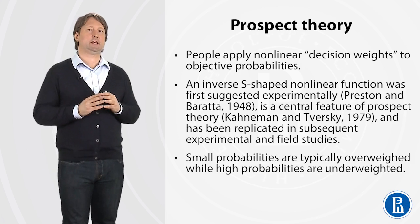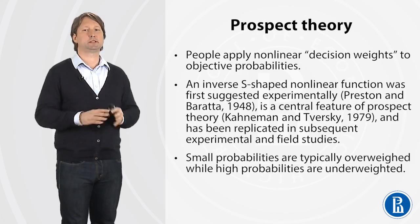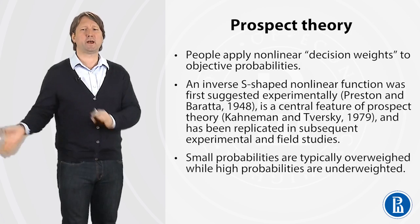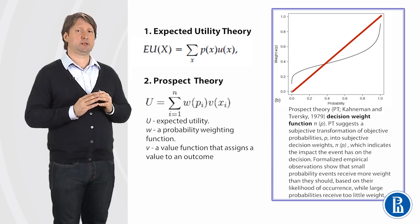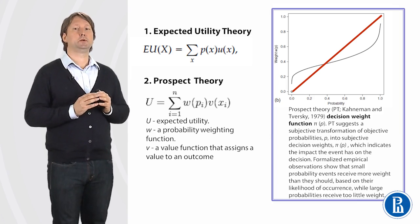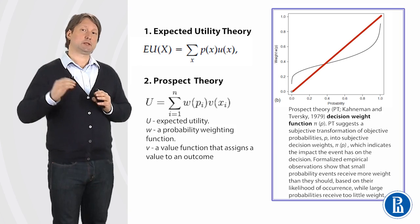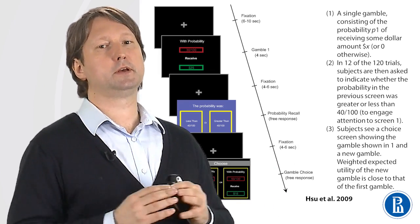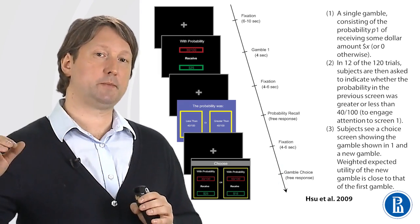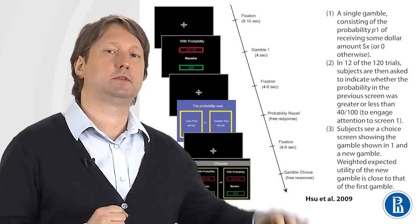Prospect theory suggests that people apply non-linear decision weights to objective probabilities. Small probabilities are typically overweighted while high probabilities are typically underweighted. This makes prospect theory very different from expected utility theory, which suggests that we process probabilities in an objective fashion. Prospect theory instead proposes that we use decision weight functions, overestimating small probabilities and underestimating large ones. Can we find in the brain some traces of this overestimation of small probabilities and underestimation of large probabilities?